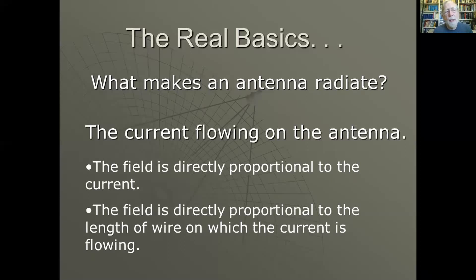So what makes an antenna radiate in the first place? It's the current flowing on the antenna. The field is directly proportional to the current and the length of the wire on which the current is flowing. This is the basis of all our antenna modeling software, for that matter. It's because that's the laws of physics. It's what the real antenna does, so it's what the model takes advantage of.